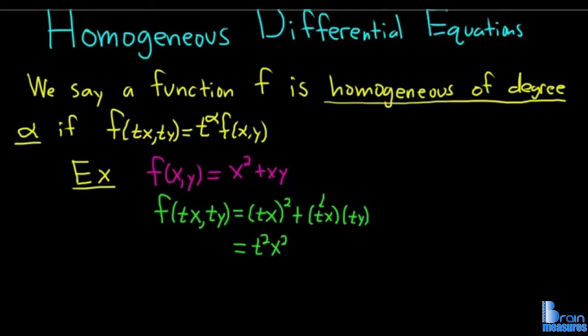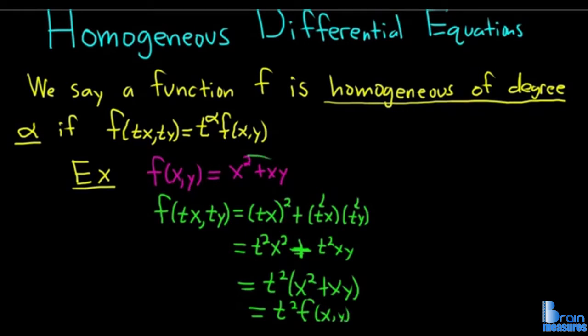We can use properties of exponents. We get t²x², and in the second term we can combine the t's, so this is t²xy. Now we can pull out t², so this is t²(x² + xy), and this piece here is simply f(x,y). So this is homogeneous and the degree is 2.